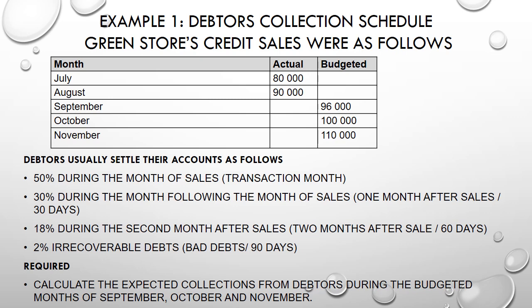In this example, what does our credit policy say? It says 50 percent of our sales should be paid in the same month. This means when a debtor comes to our store and purchases goods in July, before the end of July that debtor must settle 50 percent of those sales. It also says 30 percent during the month following the month of the sale — that is 30 days — which means the debtor will come back in August to settle 30 percent of the sales made in July.